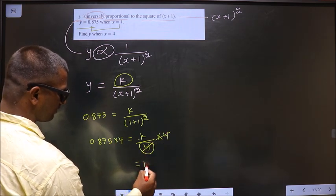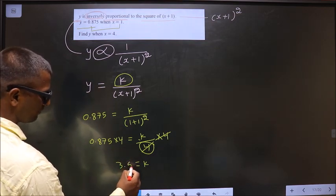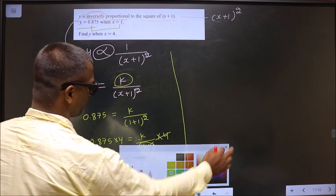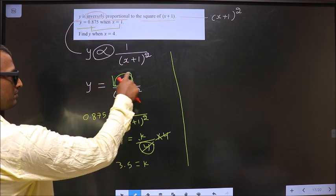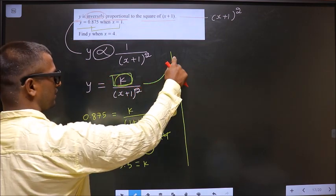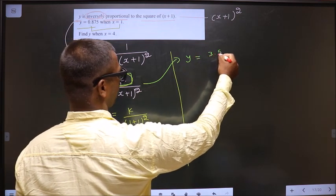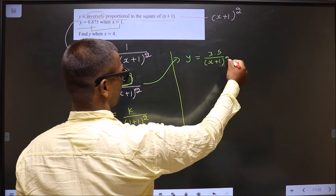So this cancel out, 0.875 into 4 is 3.5. Okay, now replace k here and now this equation becomes y equal to 3.5 by x plus 1 whole square.